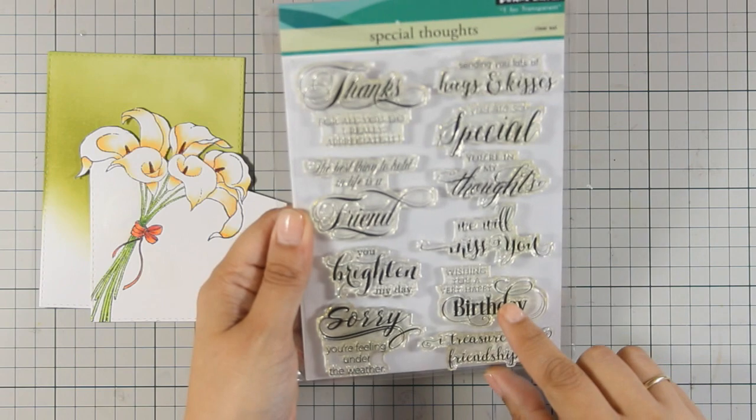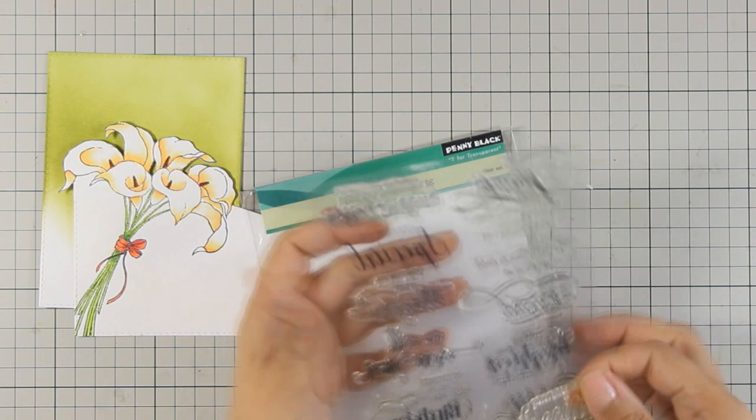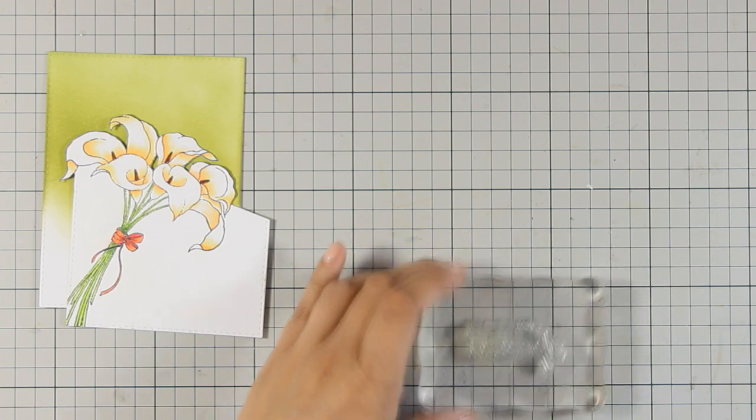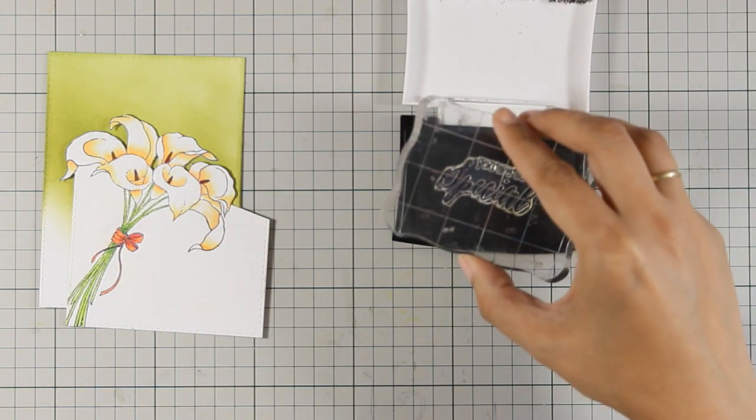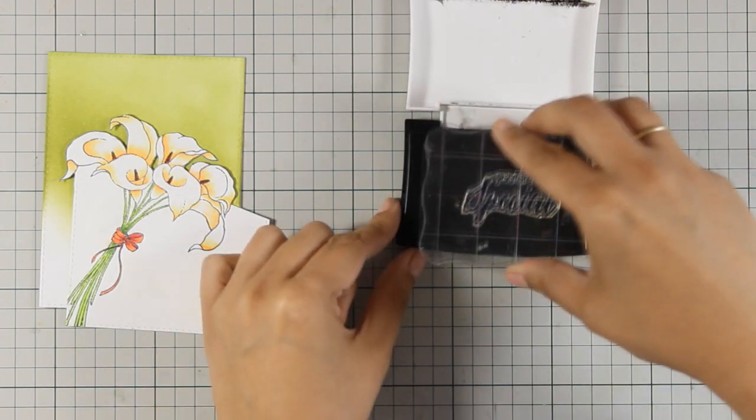For my sentiment I am using this stamp by Penny Black which is called Special Thoughts. It is a set of beautiful sayings for your cards, and I am going with the sentiment that says 'you are special.' I am going to stamp it with Black VersaFine ink, and I like this ink for stamping my sentiments because it is nice and vibrant.